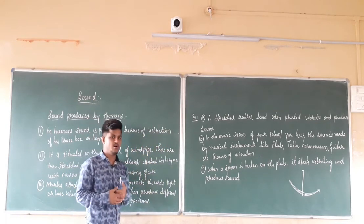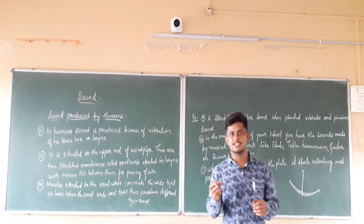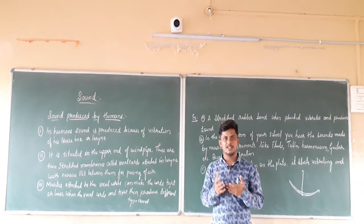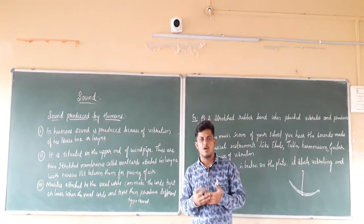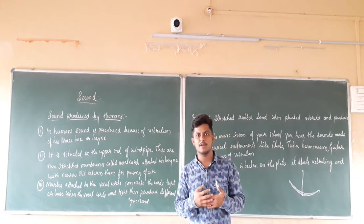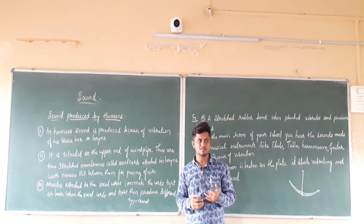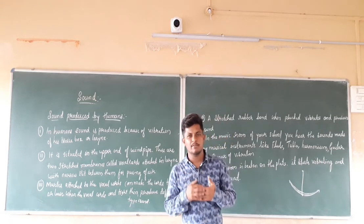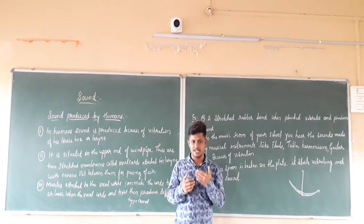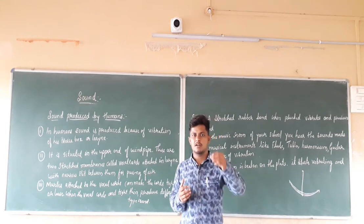We also discussed about how sound is going to be produced. Sound is produced by the vibrations of objects. Now, what are vibrations? How do vibrations occur? Vibrations are occurring because of the motion of objects or material. Vibrations are nothing but the to-and-fro motion of the object or the sound-producing material.